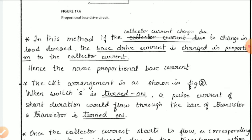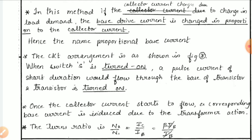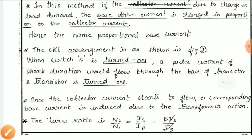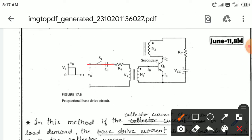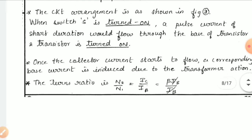In the circuit arrangement, when switch S1 is turned on, a pulse current of short duration flows through the base of the transistor and the transistor is turned on. When this switch is closed, the pulse current passes through the transformer and transfers to the secondary winding, allowing the pulse current to reach the base terminal, turning the transistor on.